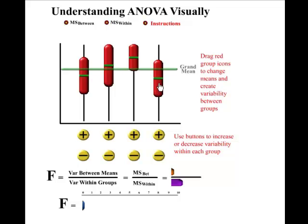How this learning object works is you manipulate these four groups, and as you do, the F-statistic changes in some way.